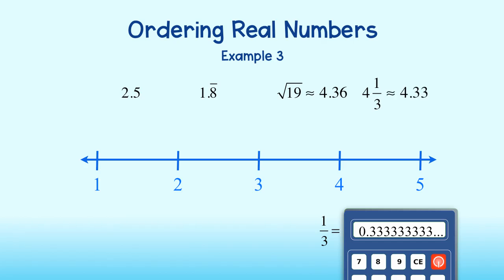Okay, so let's go ahead and place these numbers on the number line. We will place 2 and 5 tenths halfway between 2 and 3. We can place 1.8 repeating right about here.